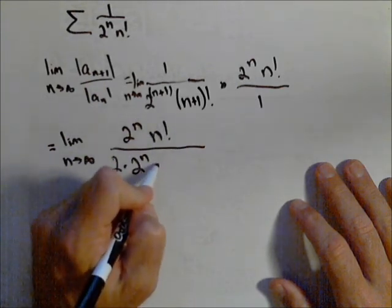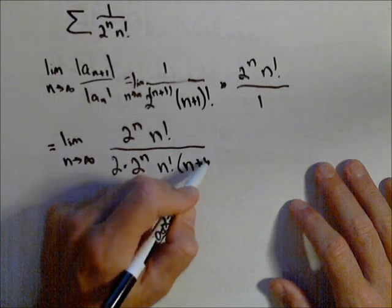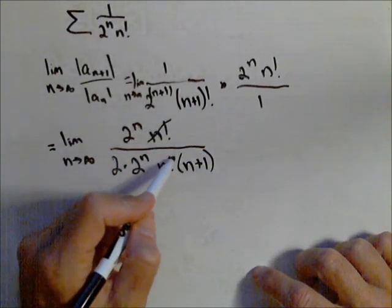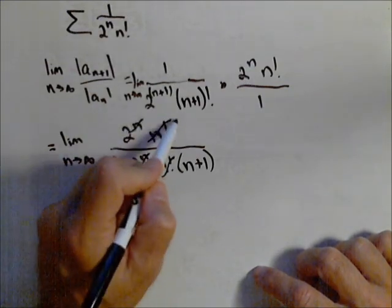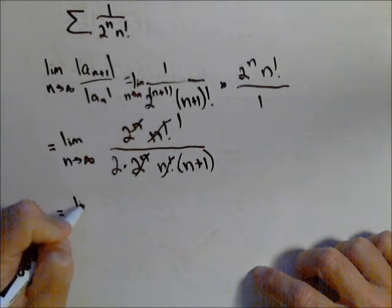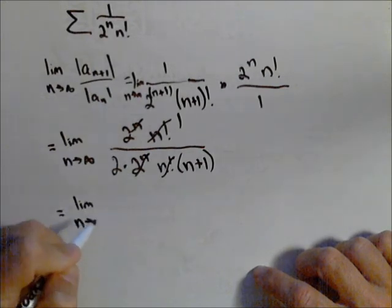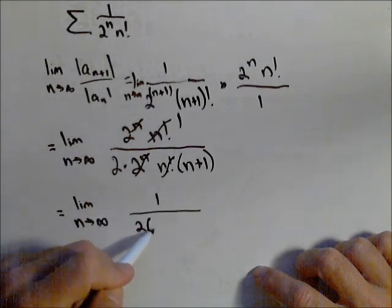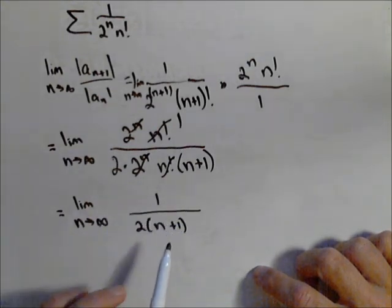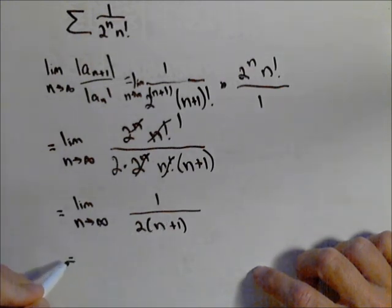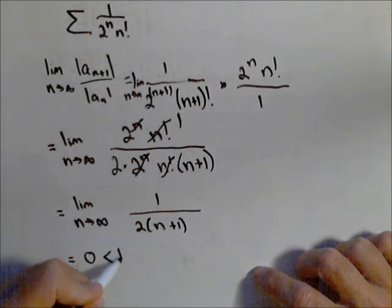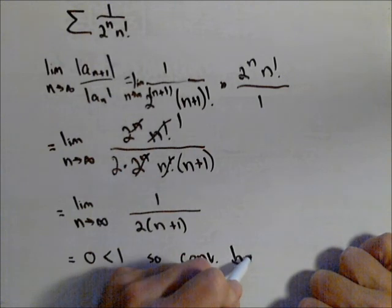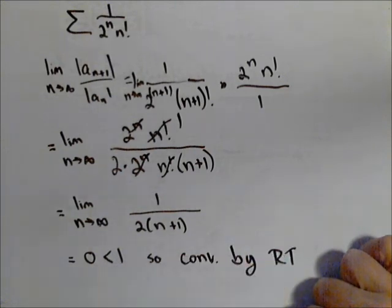n plus one factorial can be rewritten as n factorial times n plus one. Now we see our cancels: the n factorials cancel and two to the n and two to the n cancel. We're left with the limit as n goes to infinity of one over two times n plus one. The denominator grows large while the numerator stays constant, so that equals zero, which is less than one. So our original series converges by the ratio test.